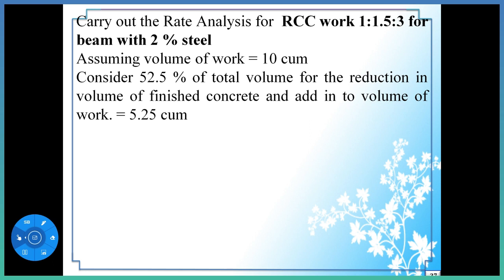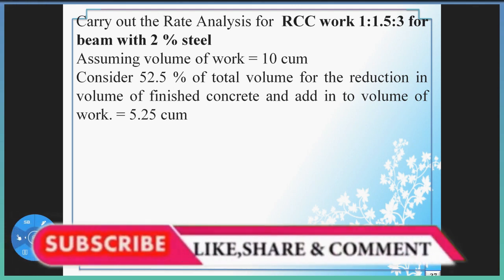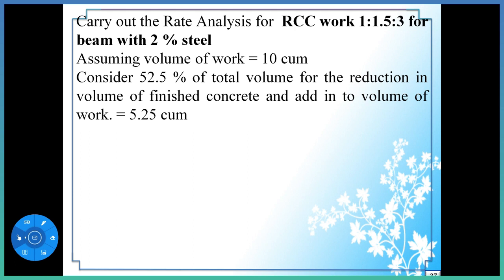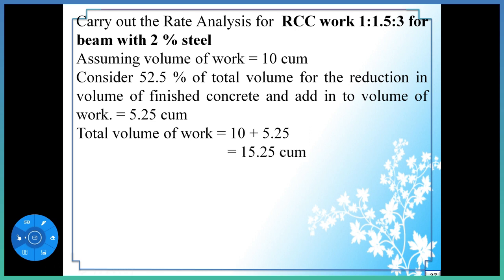The average is between 50 to 55%, so we will consider 52.5% of total volume for the reduction in volume of finished concrete. We have to add 52.5% into the volume of work. So total volume of work is equal to 10 plus 5.25, which is equal to 15.25 cubic meter.